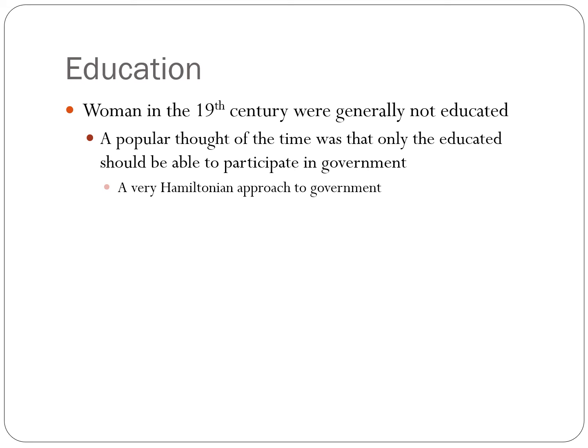When we look at women in the 19th century, they were generally not educated, and a popular position of the time was that only the educated should participate in government — therefore women shouldn't. But the problem is, if women were educated, they would be just as educated as men and therefore fit to participate in government. There is nothing about intelligence that suggests one sex is better than the other. In fact, the majority of college graduates today are female, which means, if anything, perhaps we should flip the argument.